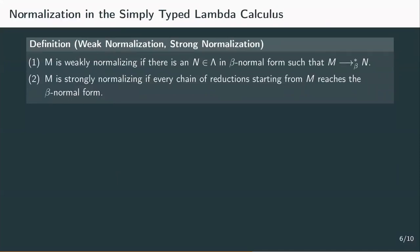In the untyped lambda calculus, we saw that there are terms that are strongly normalizing, weakly normalizing, and not normalizing at all. Let's quickly recall what each of these meant.